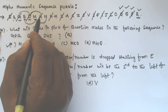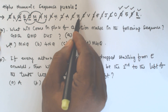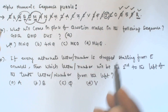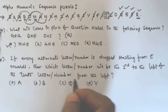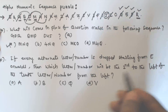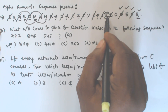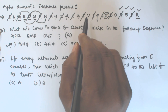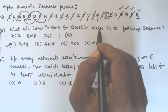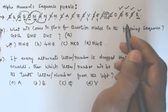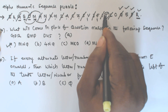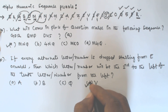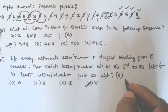Counting from the left: 1, 2, 3, 4, 5, 6, 7, 8, 9, 10 — the tenth is J. Now, the second to the left of J: the first left is F, and the second left is V. So V is the second to the left of the tenth from the left. The answer for the second question is option D.